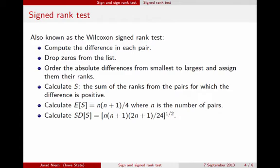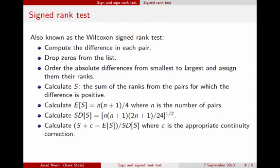The standard deviation of S is a bit more complicated but it's just a function of n, the sample size. Now we're going to do exactly what we did before in the rank sum test where we subtract from S, we subtract its mean divided by its standard deviation, but we also have to include this same continuity correction factor. Then finally we're going to calculate our p-value, again from a standard normal table.